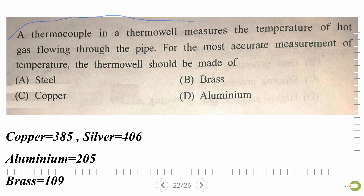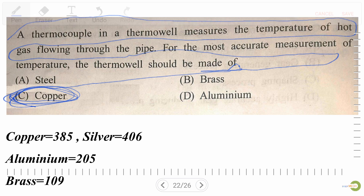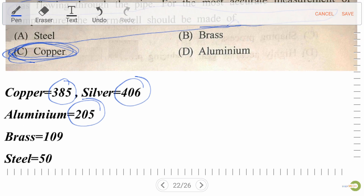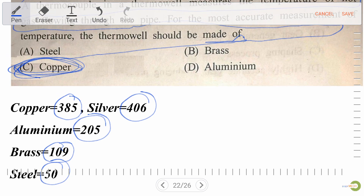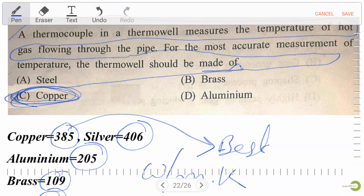Next question: a thermocouple in a thermo well measures the temperature of hot gas flowing through a pipe. For the most accurate measurement, the thermo well should be made of — steel, brass, copper, or aluminum. Our right answer is copper. Copper has thermal conductivity 385 W/m·K, silver 406, aluminum 205, brass 109, and steel 50. Silver is costly, so copper is the best answer. The unit of thermal conductivity is watt per meter kelvin.